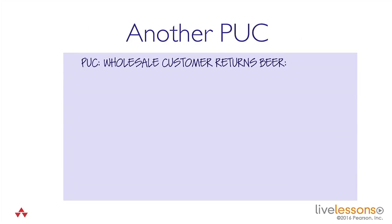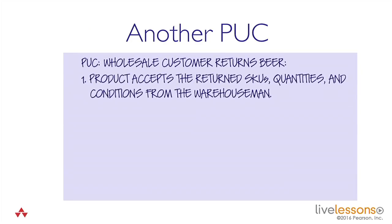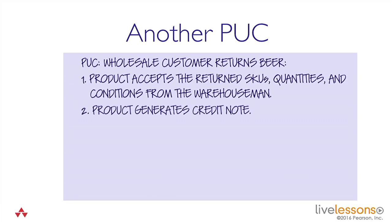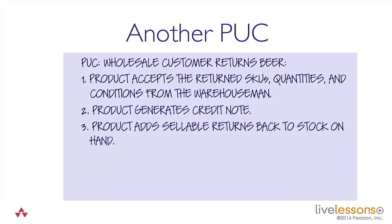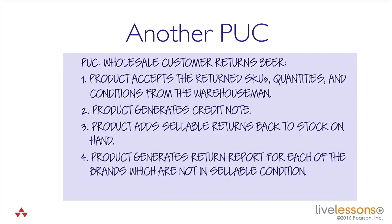Here's a sample: a wholesale customer returns some beer. Step one: the product accepts the return SKUs — a SKU (stock keeping unit) is the unit of thing a beer warehouse would sell, such as a carton containing 24 bottles or a dozen cans of a different kind of beer. The product accepts the quantities being returned and the conditions of the return from the warehouseman. The product generates a credit note. The product adds sellable returns back to stock on hand. And the product generates a return report for each of the brands not in a sellable condition.